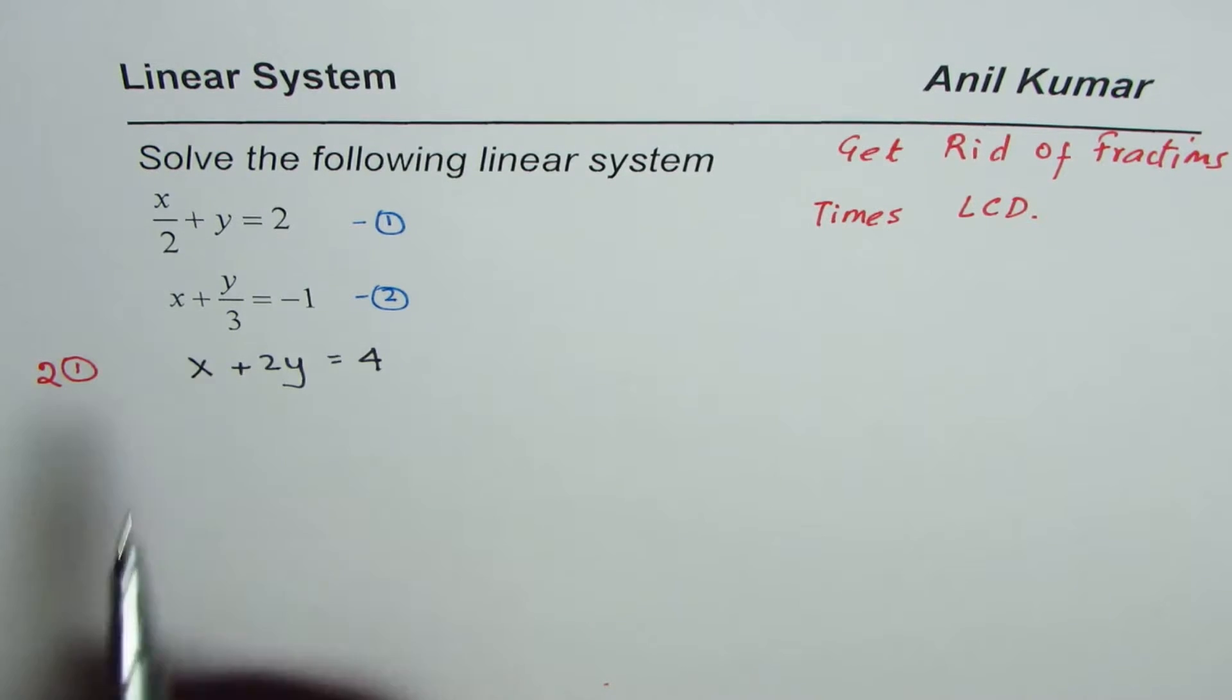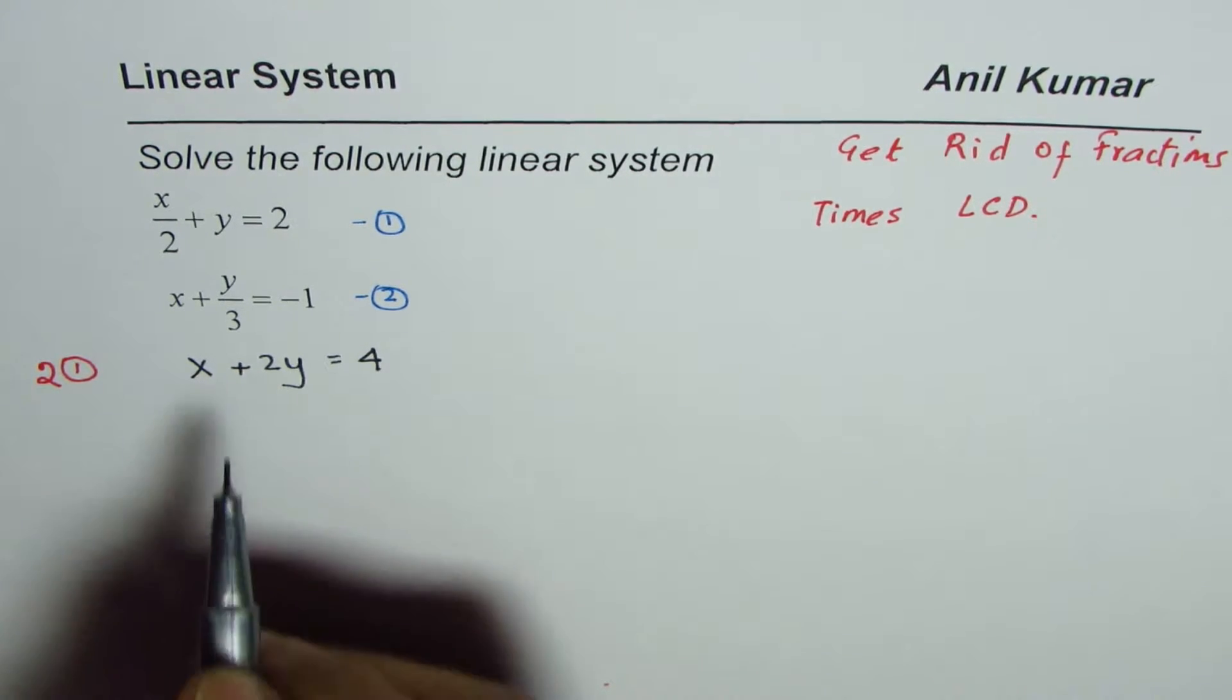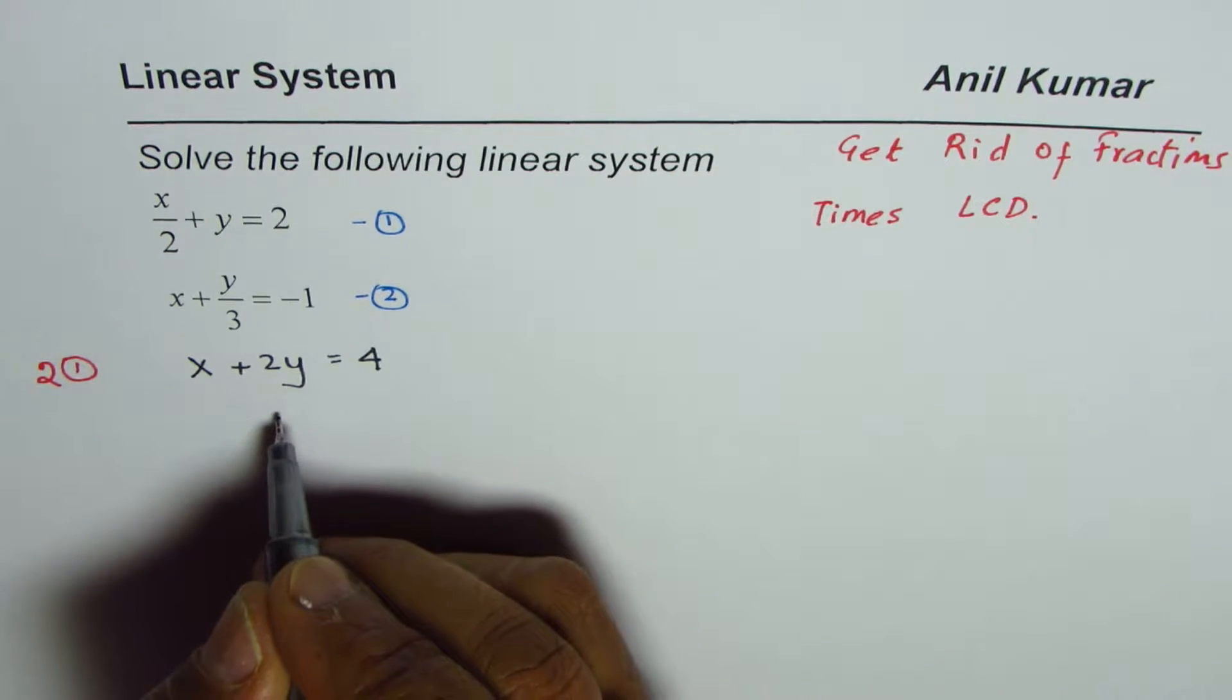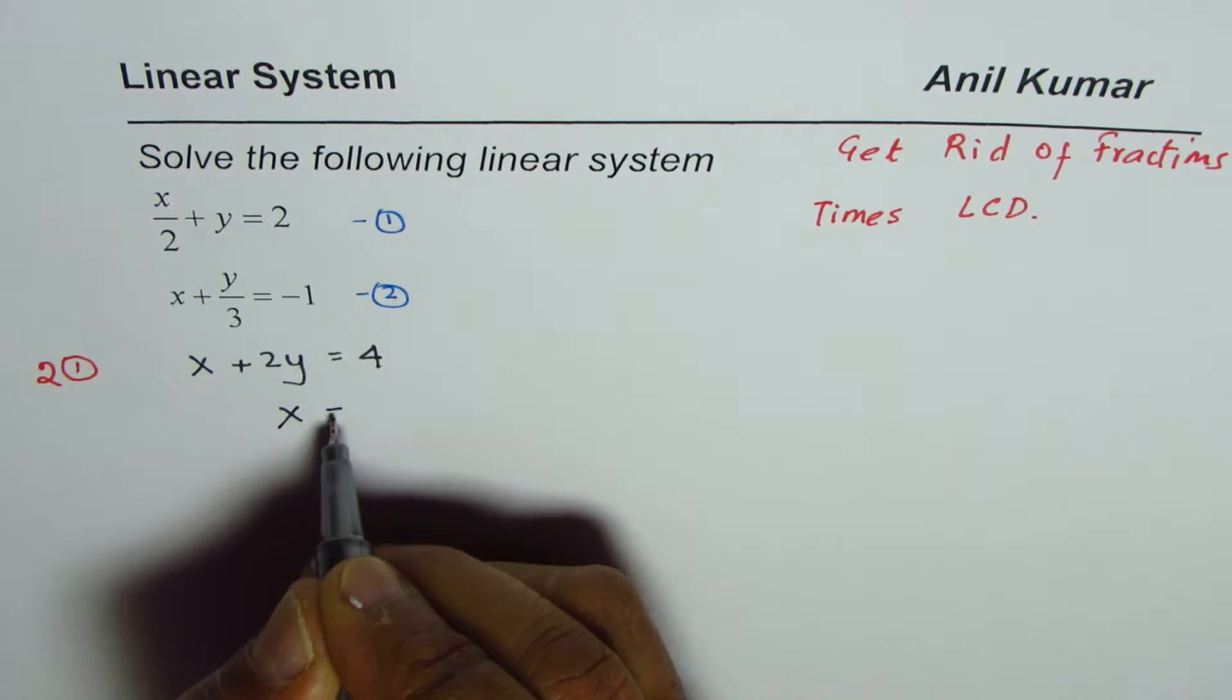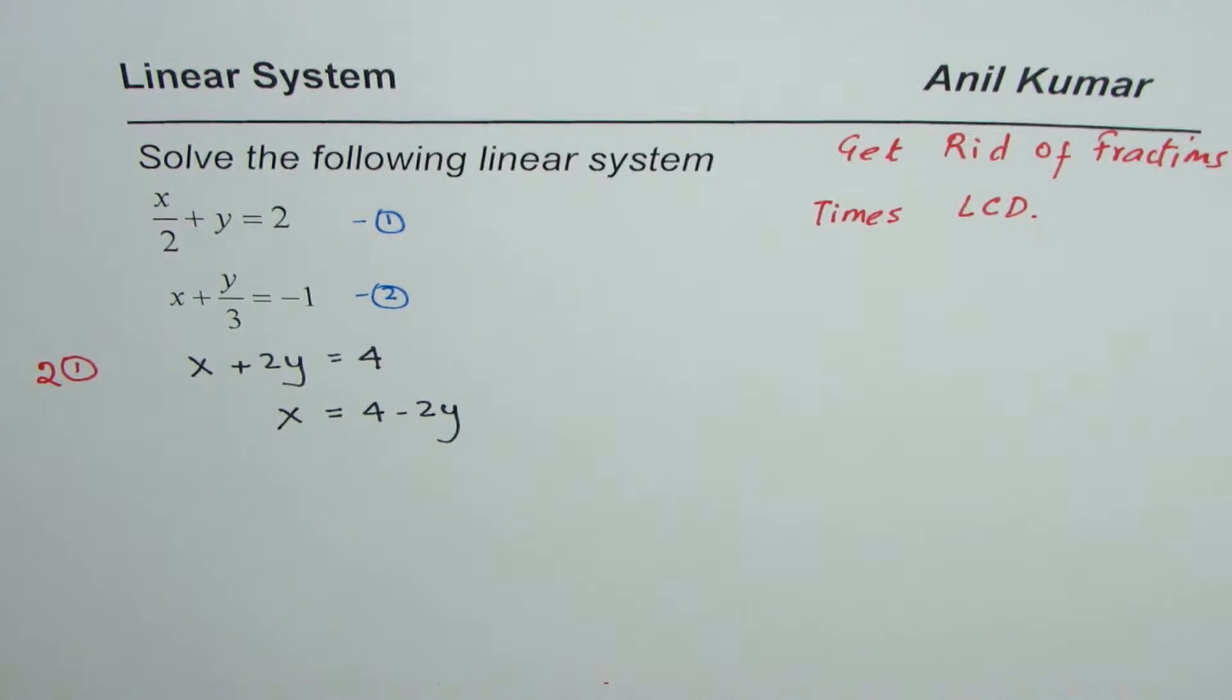Now since we are solving equations, we have a term x, we can actually write x in terms of y. So let me write this as x equals 4 minus 2y. That gives us x in terms of y and I'll call this equation number three.